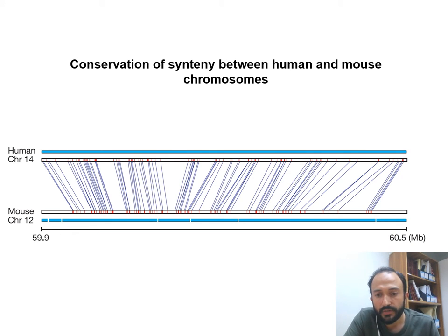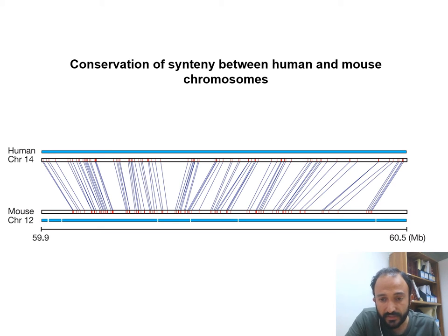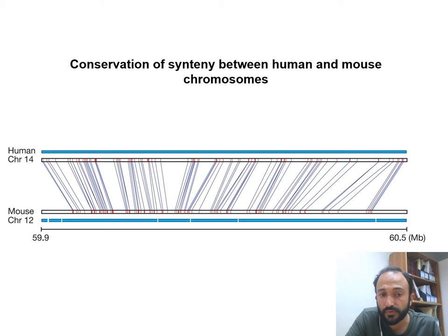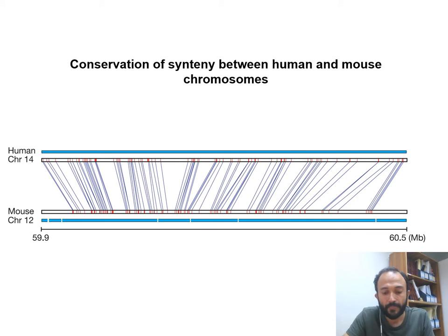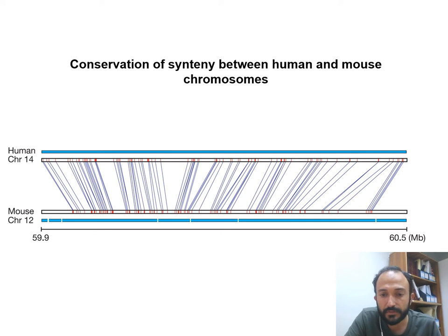This is how synteny is shown in a database. Here you can see that blue vertical bars represent the conserved and syntenic regions between human and mouse. The chromosome number being the same does not mean that the same-numbered chromosome is in synteny. It means that any chromosome which has the same information as a chromosome of the other species — for example, human chromosome 14 has many regions similar to mouse chromosome 12 regions — that is the syntenic part between human and mouse.